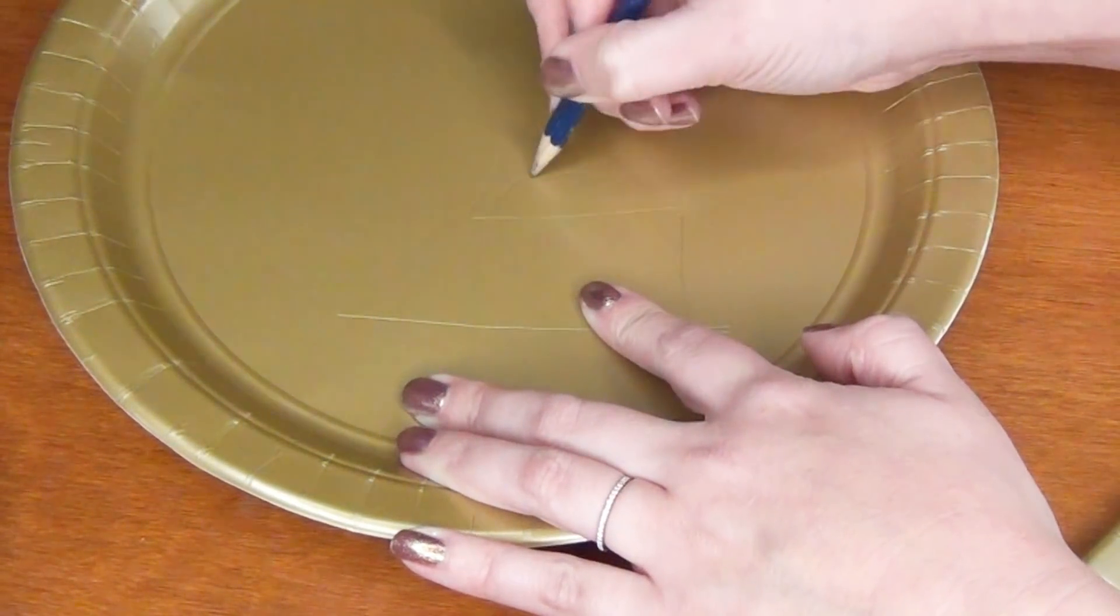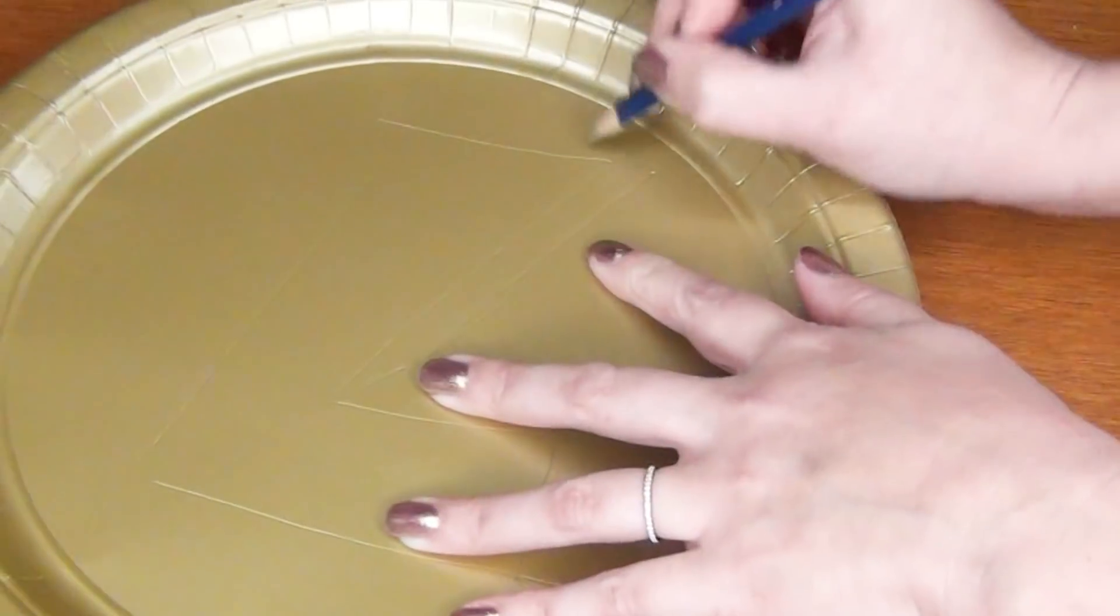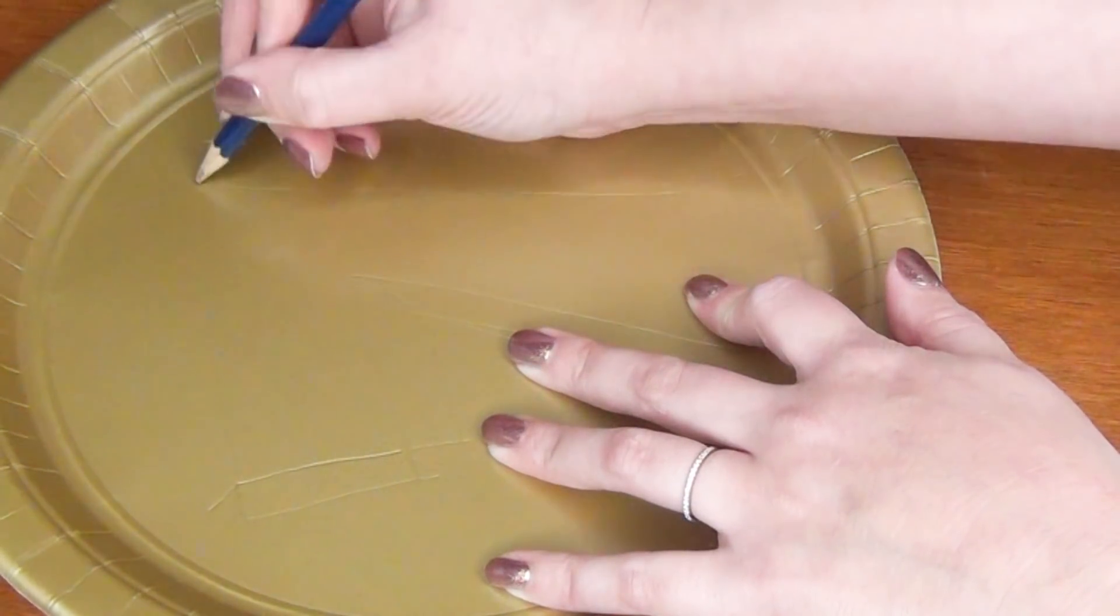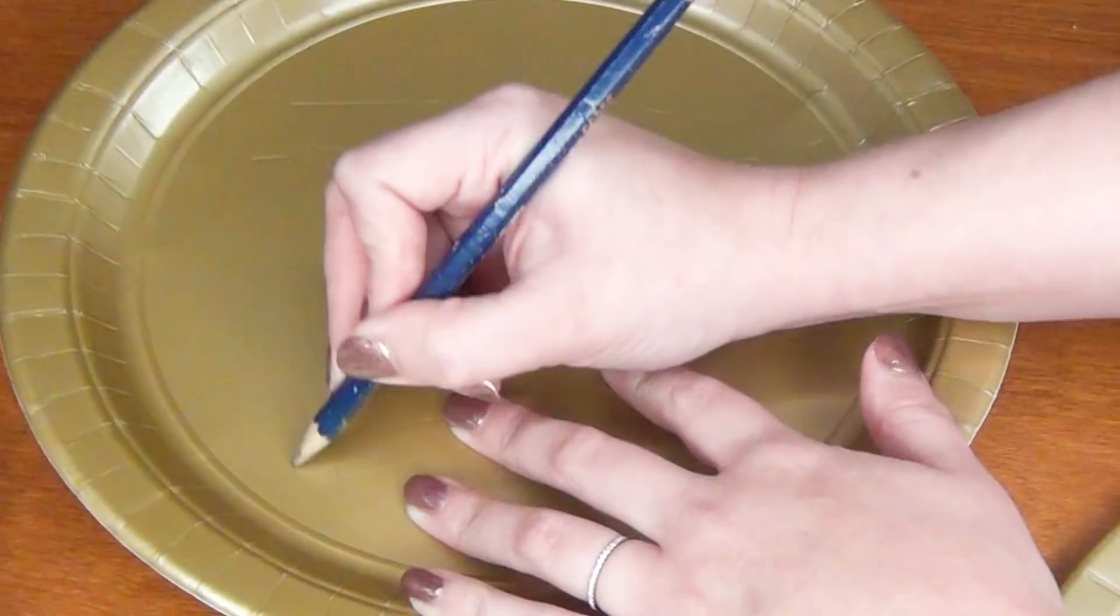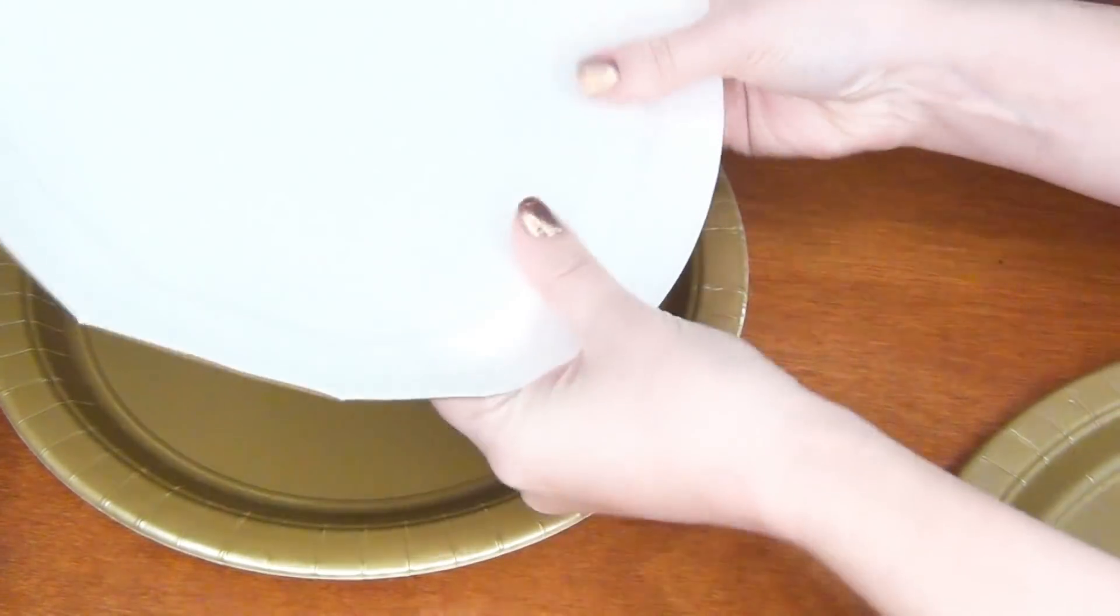Then go back in with your pencil and start drawing tabs around the perimeter of each of your numbers. You'll want more tabs on the areas where the numbers curve and fewer where they're straight. These are going to serve as something for the sides of your numbers to adhere to. These work the same way paper doll clothes tabs work to hold them onto the dolls.